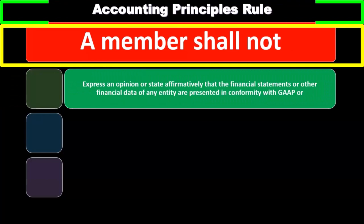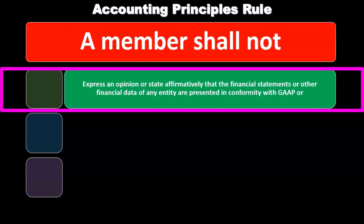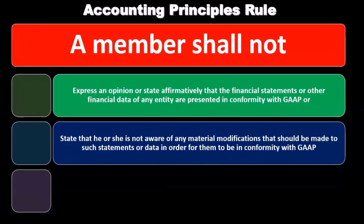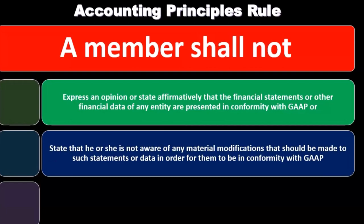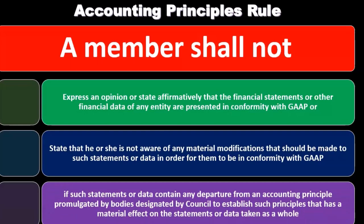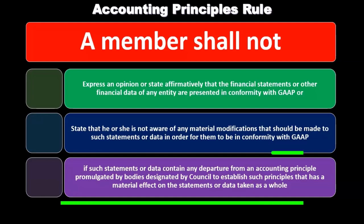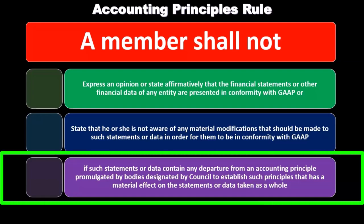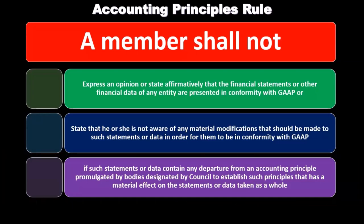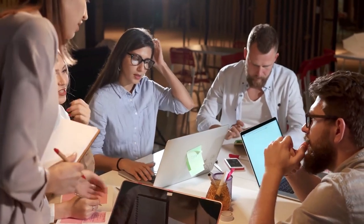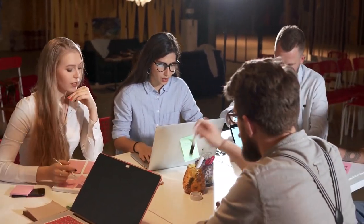A member shall not express an opinion or state affirmatively that the financial statements or other financial data of any entity are presented in conformity with GAAP — generally accepted accounting principles — or state that he or she is not aware of any material modifications that should be made to such statements or data in order for them to be in conformity with GAAP, if such information or data contain any departure from an accounting principle promulgated by bodies designated by counsel that has a material effect on the statements or data taken as a whole. Basically, within the audit engagement, we cannot give an opinion on financial statements being fairly stated if they are not fairly stated in accordance with generally accepted accounting principles.